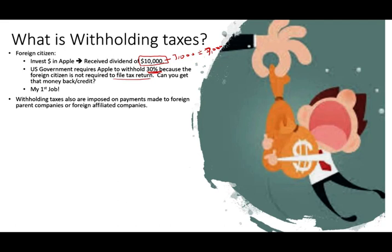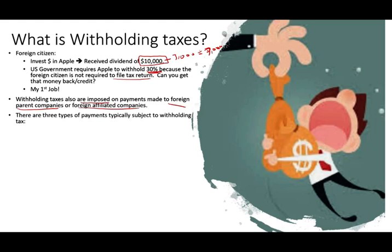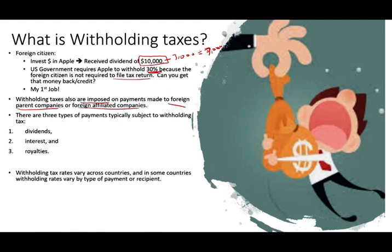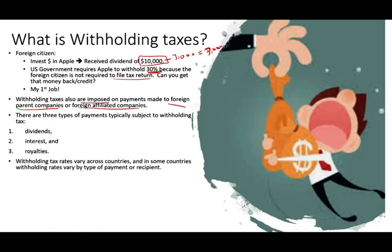Withholding taxes apply the same way to companies. Withholding taxes are also imposed on payments made to foreign parent companies or foreign affiliate companies. If you are operating as a company and want to make payment to your parent company in a different country, you might be subject to withholding. There are three types of payments subject to withholding: dividends paid to the parent company, interest, and royalties.